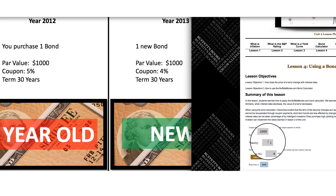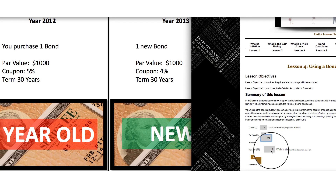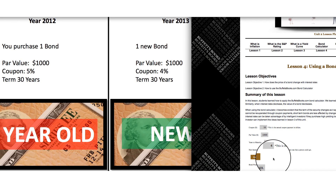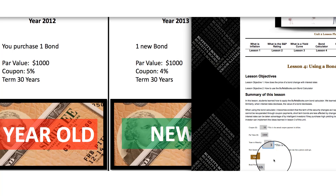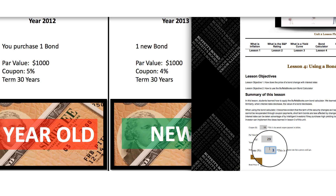But when that bond has a lot of term left and interest rates go down, the value increases a lot — especially for only owning it one year. Let's say interest rates went down to 3%. Look how much that bond price changed: it's almost a $1,400 bond. You almost gained $400 in one year because of such a drastic change in interest rates. As those interest rates go down, the bond price goes up.